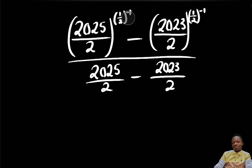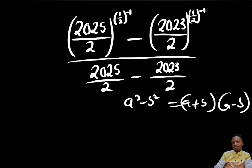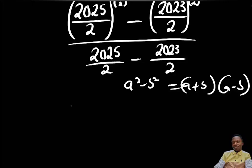Here is going to be to the power 2, then you apply what we call the difference of two squares. a squared minus b squared is the same thing as a plus b times a minus b. So straight away we can say that we have 2025 divided by 2.